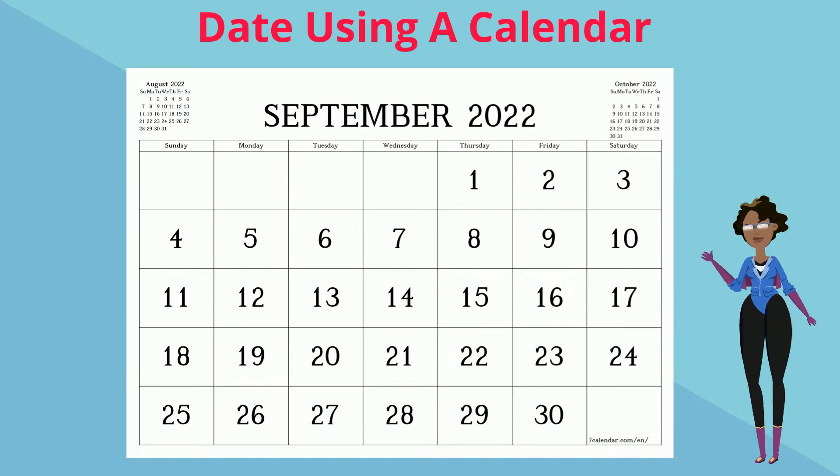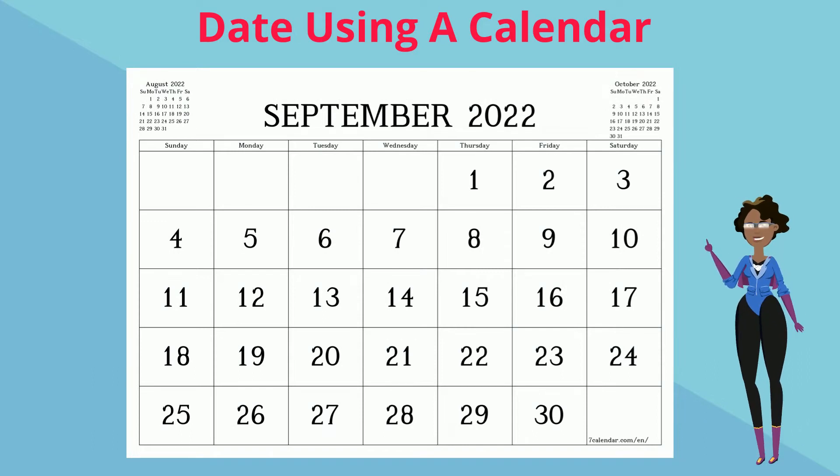Calendars tell us a lot of information. We can tell what day it is by looking at the number of that day, the month, and the year.